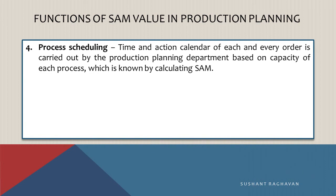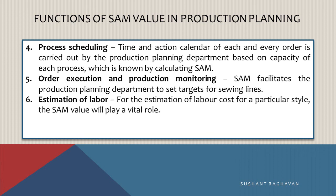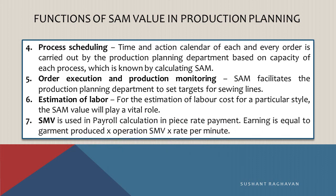Process scheduling: the time and action calendar of each and every order is carried out by the production planning department, based on the capacity of each process, which is known by calculating SAM. Order execution and production monitoring: SAM facilitates the production planning department to set targets for sewing lines. Estimation of labor: for the estimation of labor cost for a particular style, the SAM value will play a vital role. SMV is used in payroll calculation in piece-rate payment. Earning equals garment production for the operation × SMV × rate per minute.